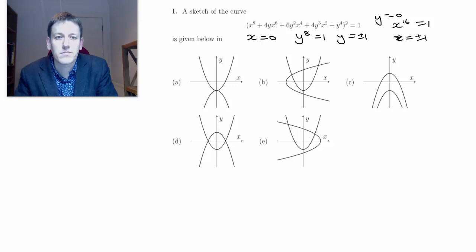Right so now I look at the different graphs. This first one only has one Y axis crossing point so it can't be that one. This one has two X axis crossing points but three Y axis ones so it's not there. This one has two of each so maybe it's that one. This has two of each so maybe it's that one. This has two X axis crossing points and three Y axis crossing points so it's not this one.